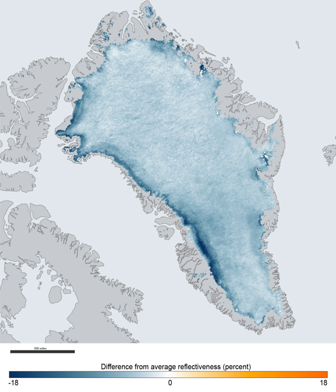In addition to the large ice sheet, isolated glaciers and small ice caps cover between 76,000 and 100,000 square kilometres around the periphery. If the entire 2,850,000 cubic kilometres of ice were to melt, it would lead to a global sea level rise of 7.2 metres, over 14,000 years at current rates of melting.